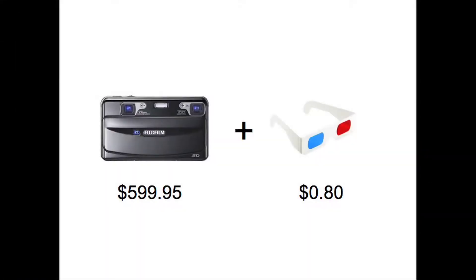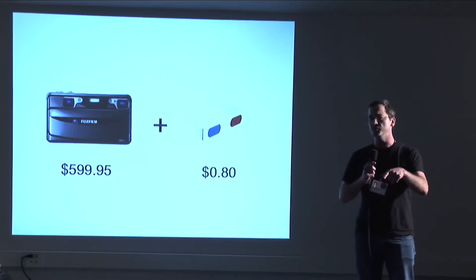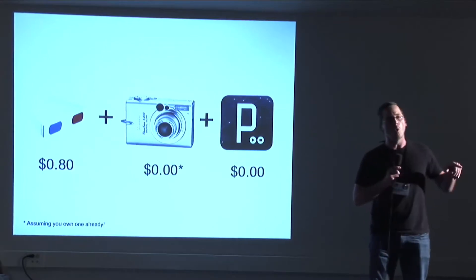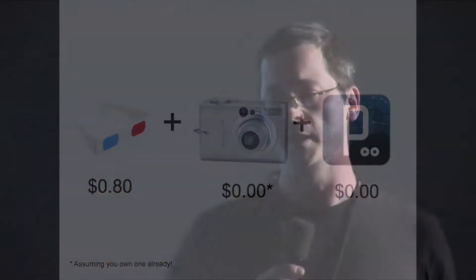So if you want to get into 3D photography as a person, how do you do it? There's a professional route, which is basically you can buy a $600 camera — this is the Fuji FinePix — and an 80-cent pair of funky glasses. Or you can go a DIY route, which is what I want to talk about tonight: an 80-cent pair of glasses, a digital camera you already own, and a processing script to do all the image work.